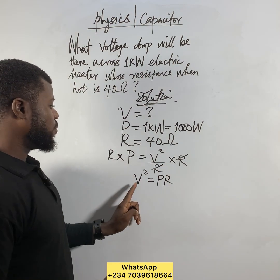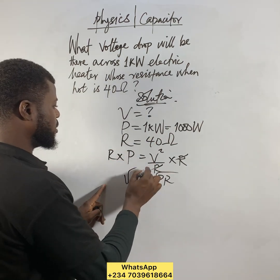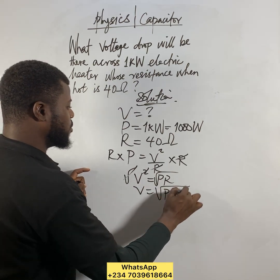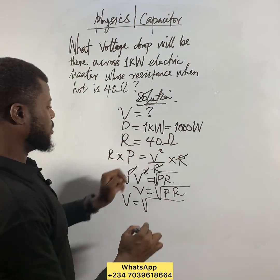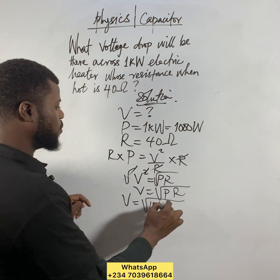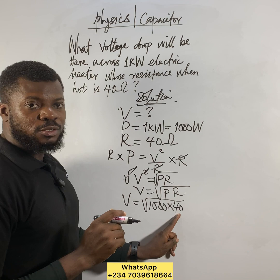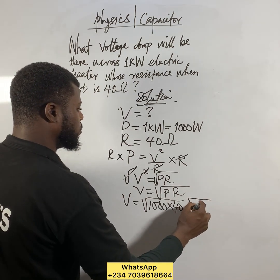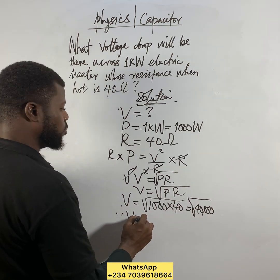Now to get V, take the square root of both sides. The square and square root cancel, so V equals the square root of P times R. Substituting: P is one thousand and R is forty, so we get the square root of one thousand times forty, which equals the square root of forty thousand.